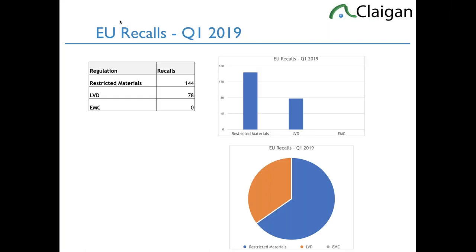A diversion to EU recalls: in 2018, for the first time restricted materials recalls surpassed electrical safety — the Low Voltage Directive. That has accelerated a lot in Q1 2019; now restricted materials have almost twice as many recalls as electrical safety. Electrical safety is still very important, but restricted materials are the growing concern. This has a lot to do with the European Chemical Agency's Enforcement Forum, which has a mandate and funding to train investigators in each country and build enforcement capability.